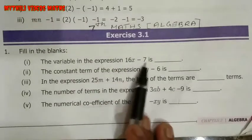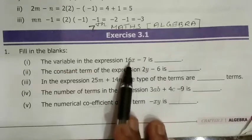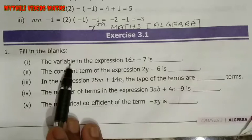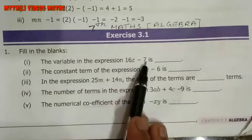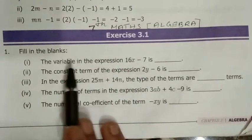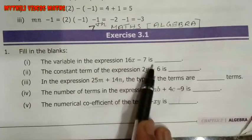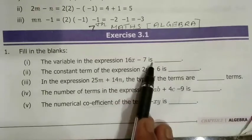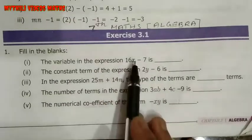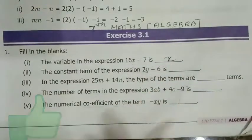See here, this is the expression 16x-7. So in the expression, we have to identify the variable. What will the variable be? The variable is an alphabet — it may be a, b, x, y, z, whatever. So what is the variable in the expression? The answer is x.